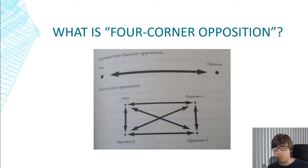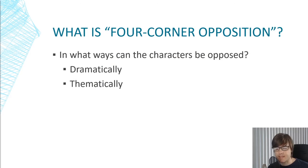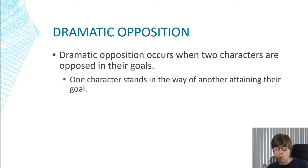We have to remember the different ways that characters can be opposed. They can be opposed dramatically — in other words, in terms of their goals — but they can also be opposed thematically, in terms of the way that they approach life. Dramatic opposition occurs when two characters are opposed in their goals: one character stands in the way of the other attaining their goal, and typically they both stand in the way of each other.